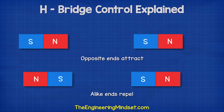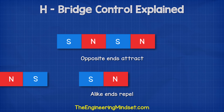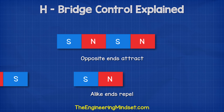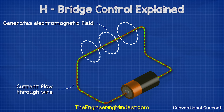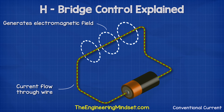We know that magnets will interact. The opposite ends will attract while the alike ends repel. When current flows through a wire, it creates an electromagnetic field.